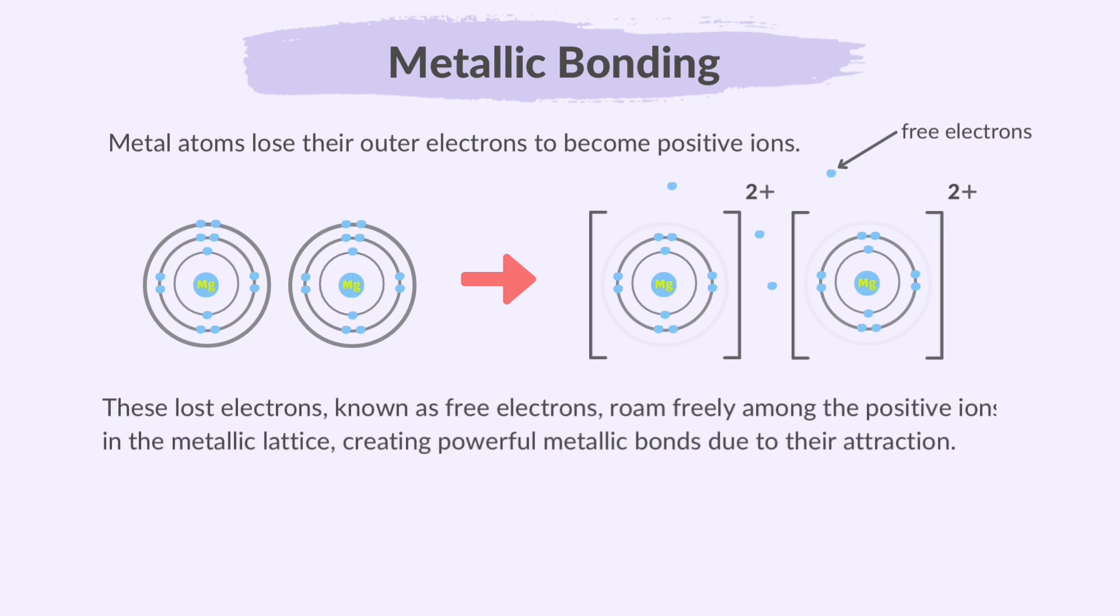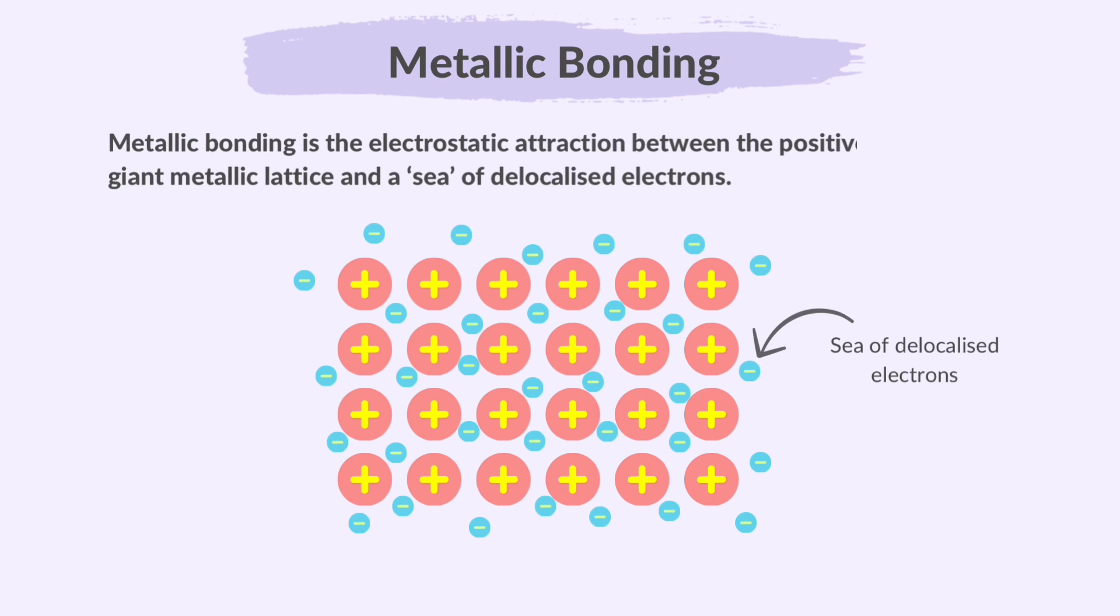These lost electrons, known as free electrons, roam freely among the positive ions in the metallic lattice, creating powerful metallic bonds due to their attraction. This combination of positive ions and free electrons forms a strong bond that holds metals together. So, metallic bonding is the electrostatic attraction between the positive ions in a giant metallic lattice and a sea of delocalized electrons.